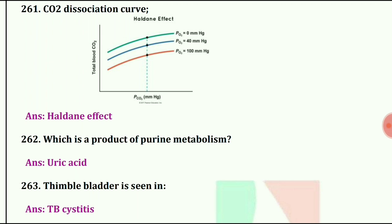Which is a product of purine metabolism? The answer is uric acid.